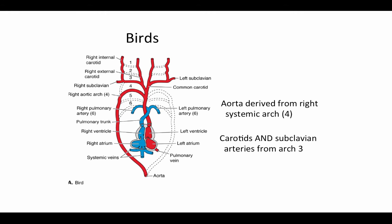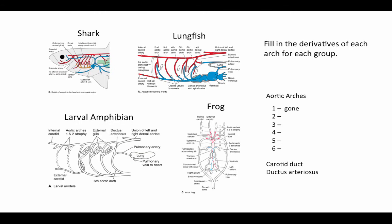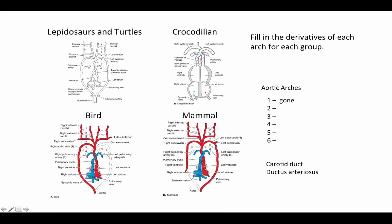To process and synthesize all of this information, I suggest making a little chart for each of the groups discussed — shark, lungfish, larval amphibian, frog, lepidosaurs and turtles, crocodilians, mammals, and birds — stating what are the derivatives of each arch and what structures they give rise to in each group. Keep track of the fate of the carotid duct and the ductus arteriosus for each group. Doing this will help you trace the history of each of these arches across all of these vertebrate groups.